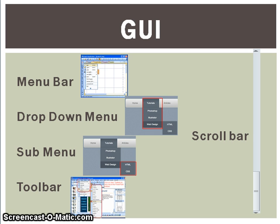Graphical user interfaces have a desktop on which windows, icons and menus are displayed. The user usually controls the GUI by using a pointing device such as a mouse.